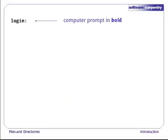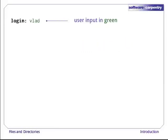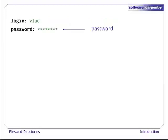Let's start by logging into the computer. Here we're showing the shell's prompt in bold, and explanatory text in blue. Type our user ID — we'll show user input in green — and then our password. Most systems will print stars to obscure it, or nothing at all, in case some evildoer is shoulder surfing behind us.